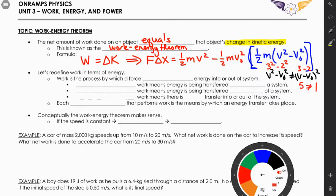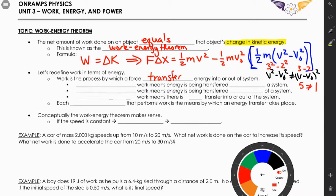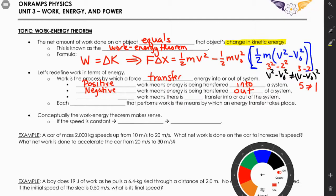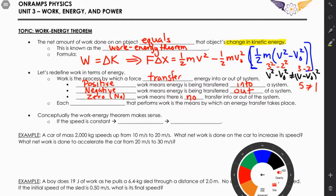There's a second definition of work: work is the process by which a force transfers energy into or out of a system. When positive work is done on a system, energy is transferred into it and kinetic energy increases. When negative work is done, energy is removed from the system and kinetic energy decreases. When there is zero work, there is no transfer of energy — nothing goes in or out.